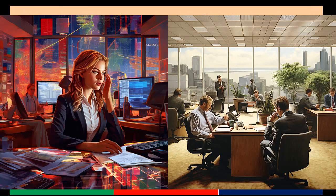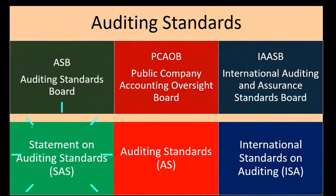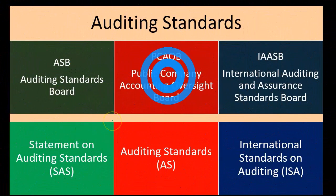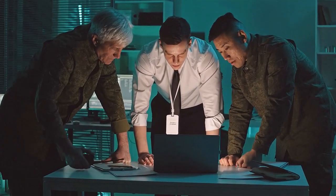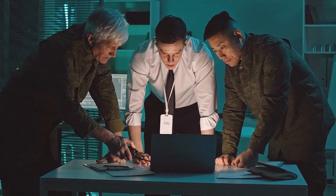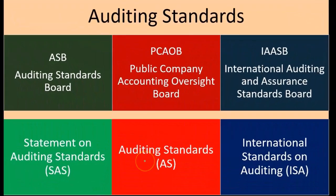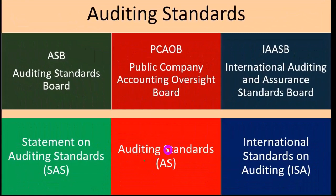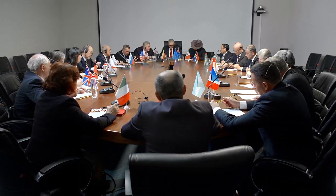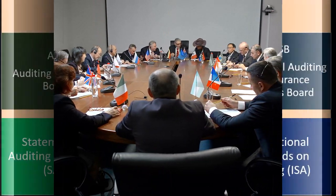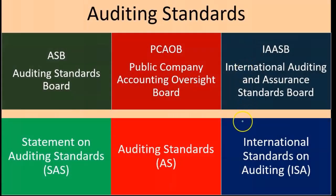The ASB issues the Statement on Auditing Standards — the SAS — so that's what we actually look up when we want to consider what the standards are. The PCAOB, if we're looking at standards for publicly traded companies, produces the Auditing Standards, or AS. And for international standards, the IAASB is the regulatory entity, and those standards — what we actually look up — are the International Standards on Auditing, or ISA.